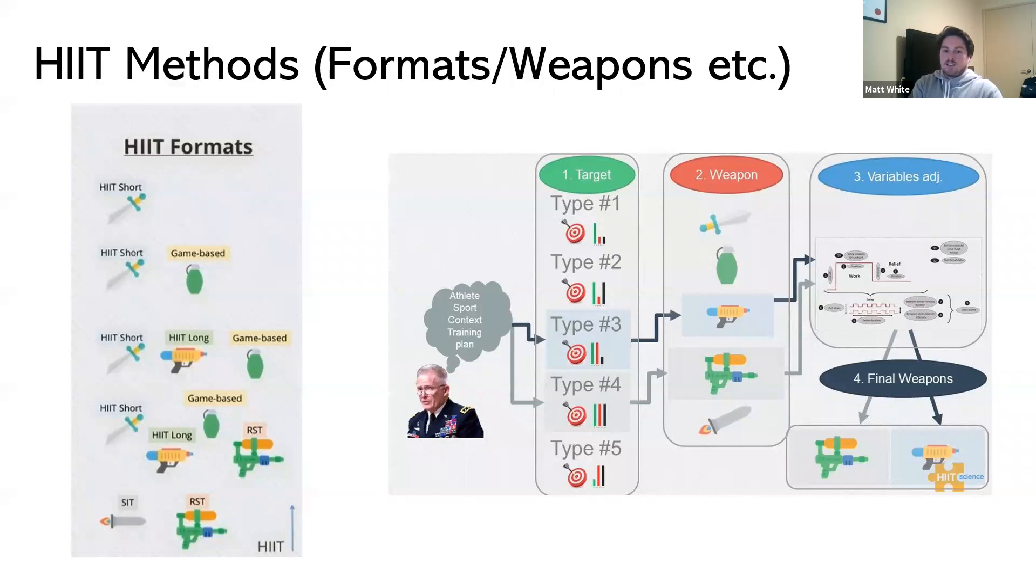The prescription variables within each HIIT method can further be adjusted to modify the acute physiological response, and more importantly, each HIIT method can be modified to target several different HIIT types. Bit of an example: HIIT short interval with its right manipulation can target HIIT types 1 to 4. HIIT long interval will target HIIT types 3 and 4. Repeated sprint training will target HIIT types 3 and 4. And sprint interval training will target HIIT type 5. You can see how HIIT short has the biggest variance with targeting the HIIT types, whereas sprint interval training can only target essentially one HIIT type.